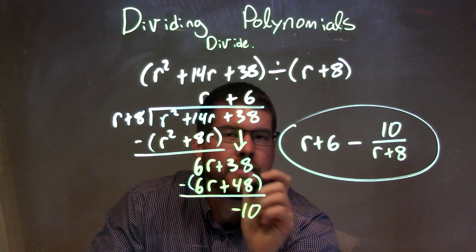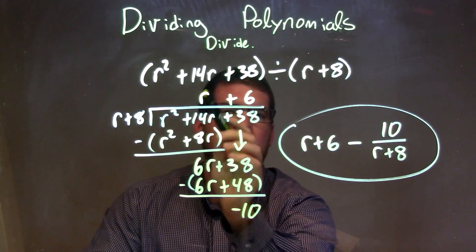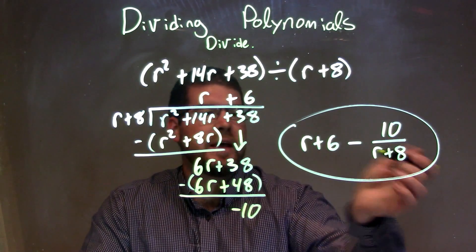So we minus 10 right there. That's our remainder. That's why we write our final answer. We have r plus 6 minus our remainder 10 over r plus 8, our divisor.